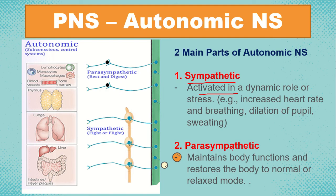The parasympathetic nervous system maintains body functions and restores the body to a normal or relaxed mode. So under the autonomic nervous system, which is part of the peripheral nervous system, these are the subconscious or automatically controlled systems.